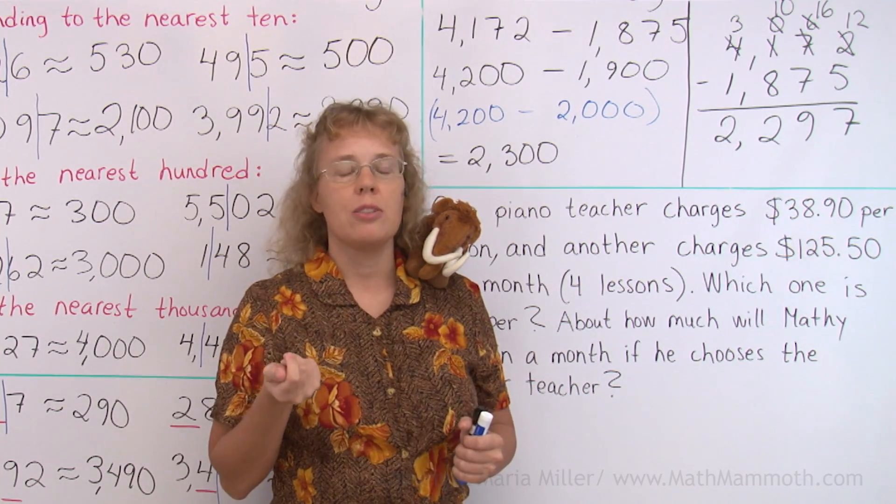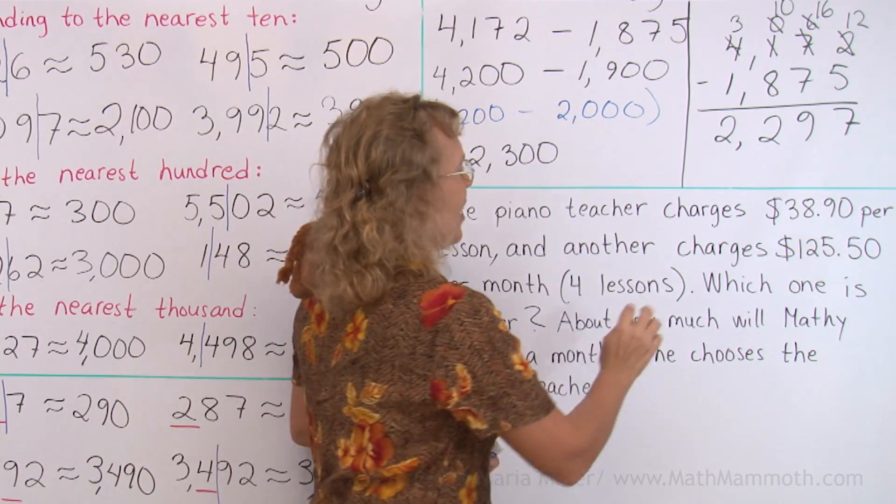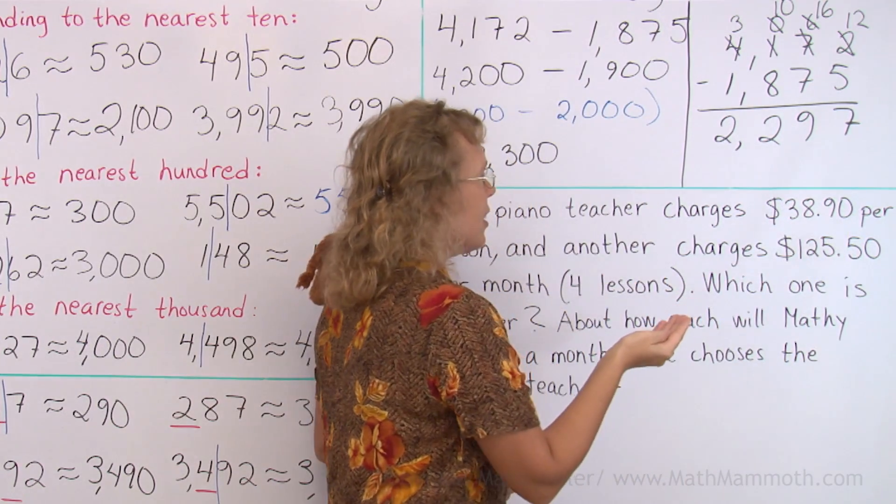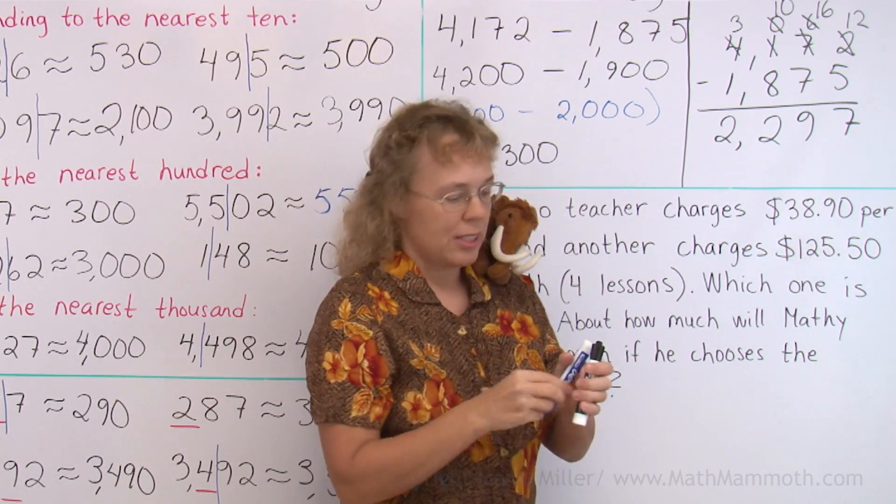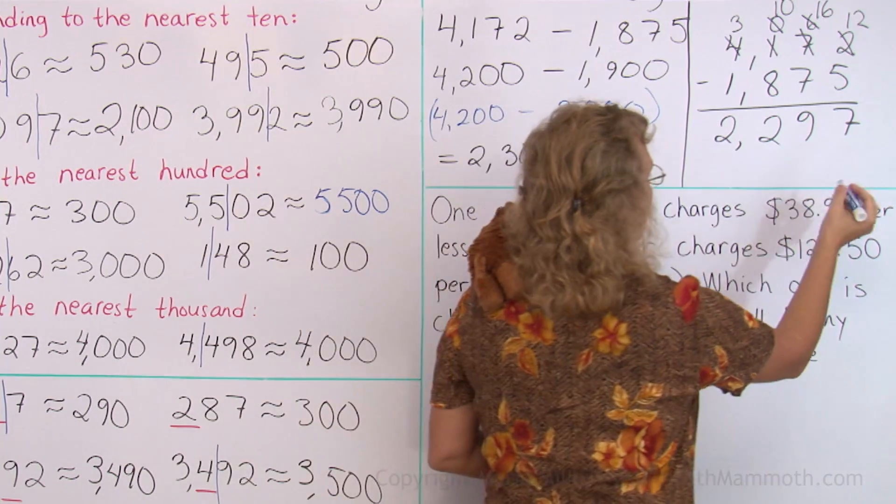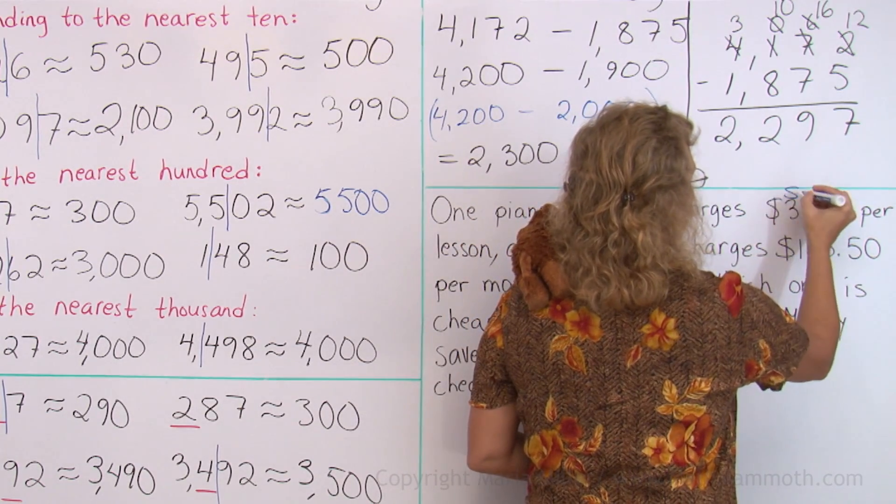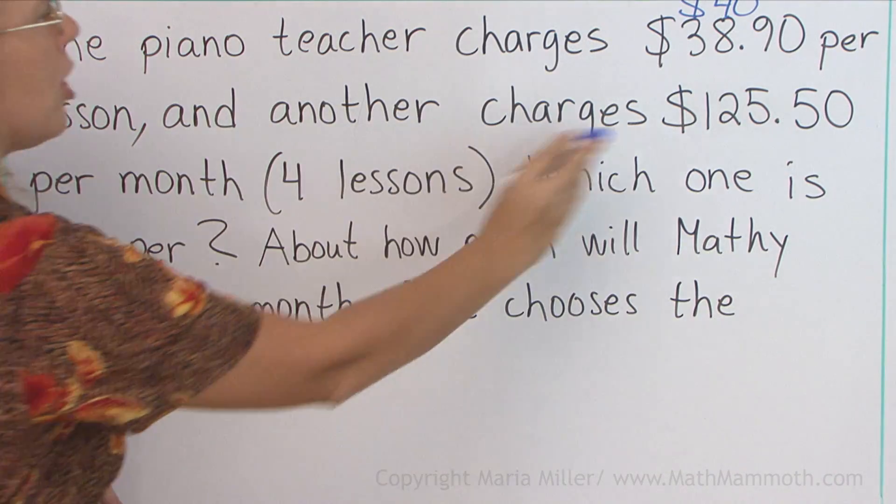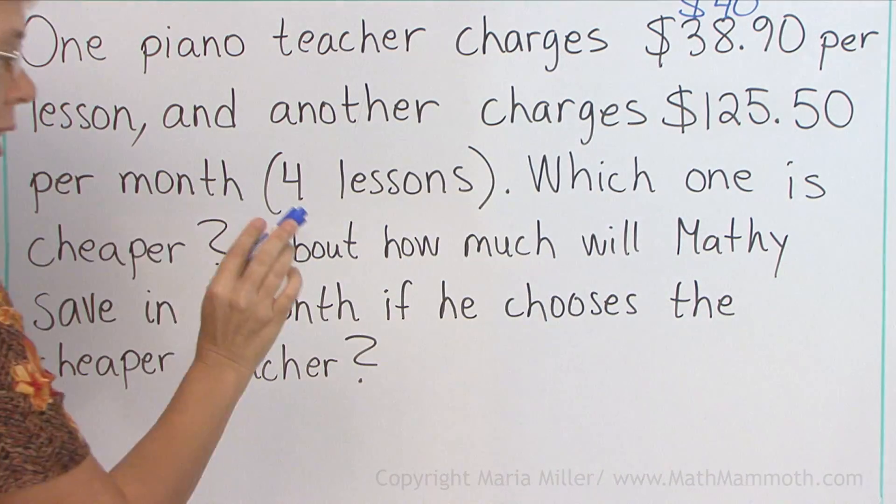The first teacher charges $38.90 per lesson, but we can round that and use the rounded number. We can round this to $40, right? And then this other one charges that much for four lessons.